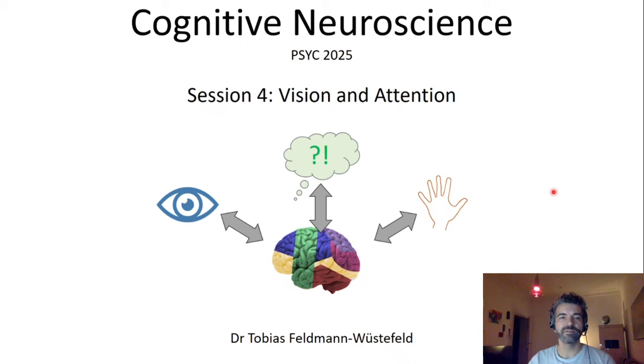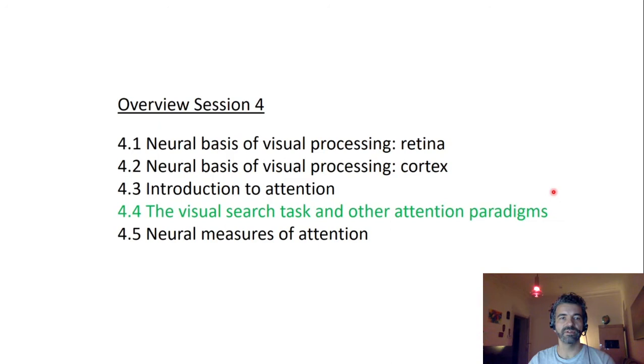This is the fourth part of today's session on vision and attention. After we've talked about visual attention in general and the spatial cueing paradigm, we will now talk about other attentional paradigms and also theories of visual attention that were derived from these paradigms.